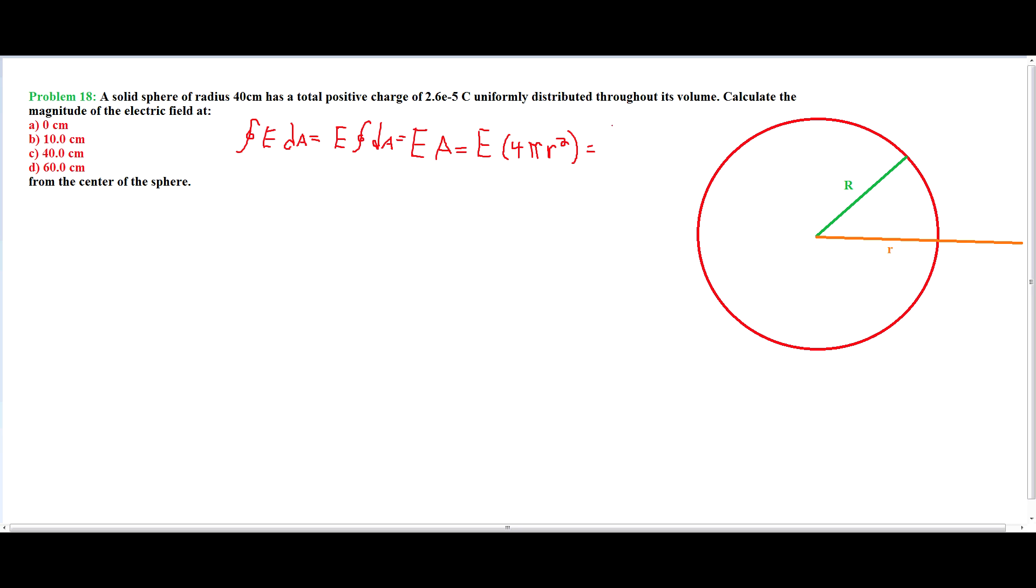Which again is equal to q over permittivity of free space, which makes the electric field equal to q divided by 4 pi r squared times the permittivity of free space. This is if r is greater than the radius inside the sphere, because we're setting the charge equal to the total charge of the sphere.